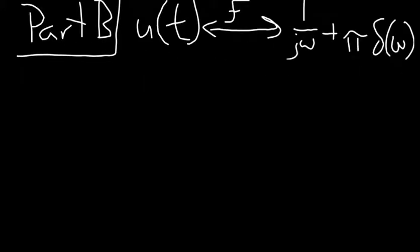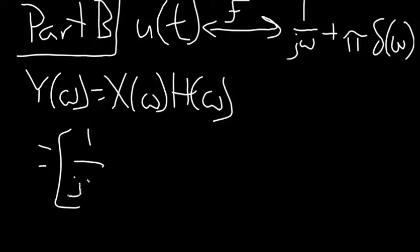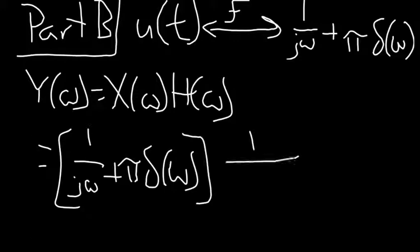For part b, using the property that u(t) Fourier transforms into 1 over j omega plus pi times delta of omega, we can then calculate Y(omega) equals X(omega) times H(omega), which in this case equals the quantity 1 over j omega plus pi times delta(omega), times the quantity 1 over j omega plus 2.